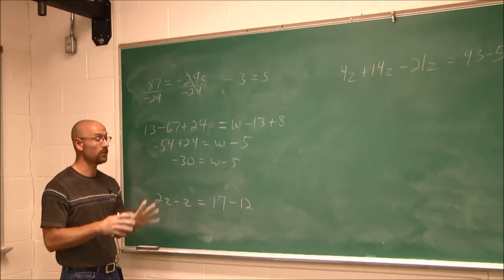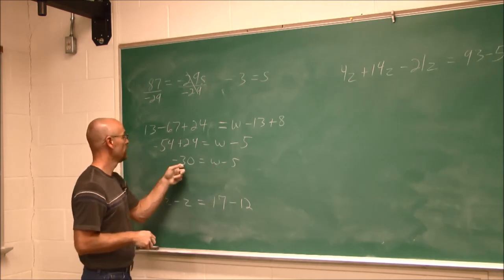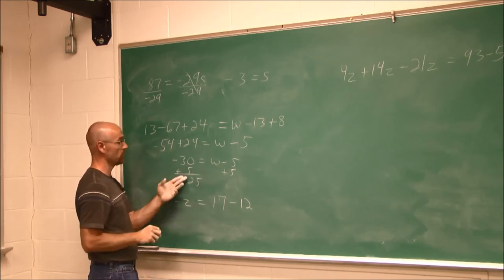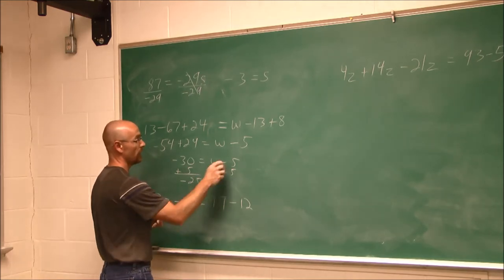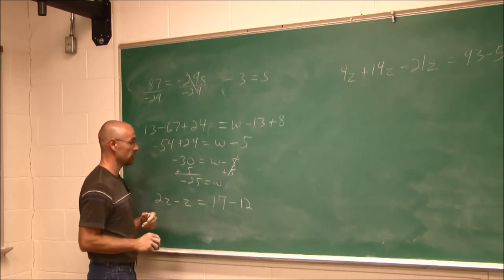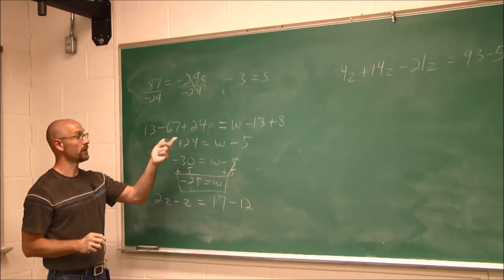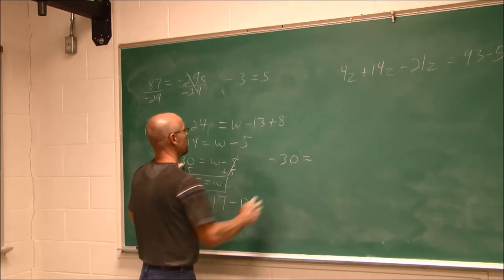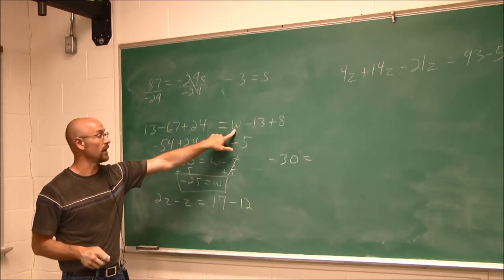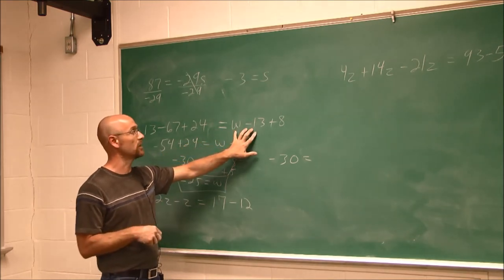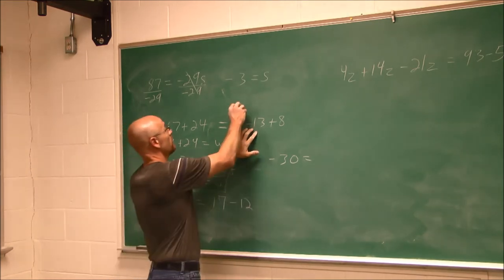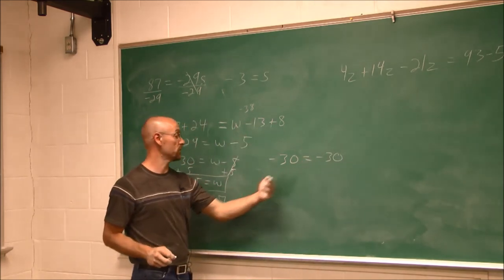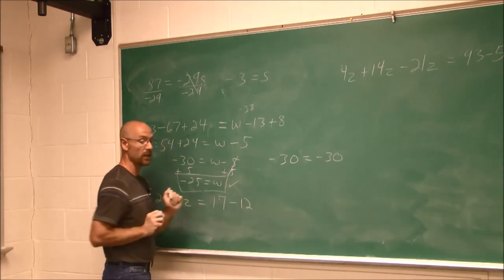Now I can continue. Negative 54 and 24: different signs, they differ by 30, the larger number is negative — giving negative 30. Now I have w minus 5 equals negative 30, and I can get w by itself. I add 5 to both sides. On the right: different signs, larger number is negative — negative 25. On the left: negative 5 plus 5 is 0, leaving just w. w equals negative 25. Let's check by plugging back in: negative 25 minus 13 — same sign, combined — is negative 38. Negative 38 plus 8 — different signs, difference is 30, larger is negative — gives negative 30. That's a true statement.